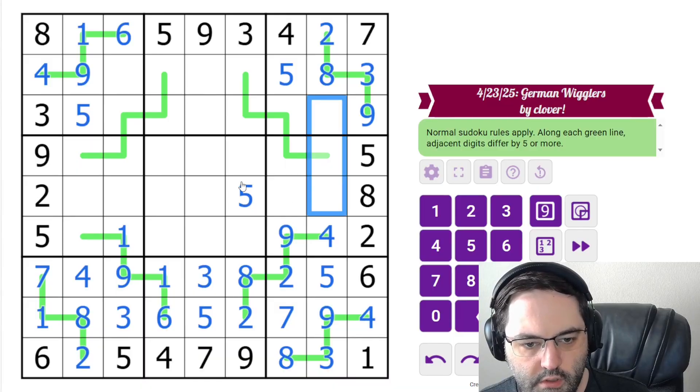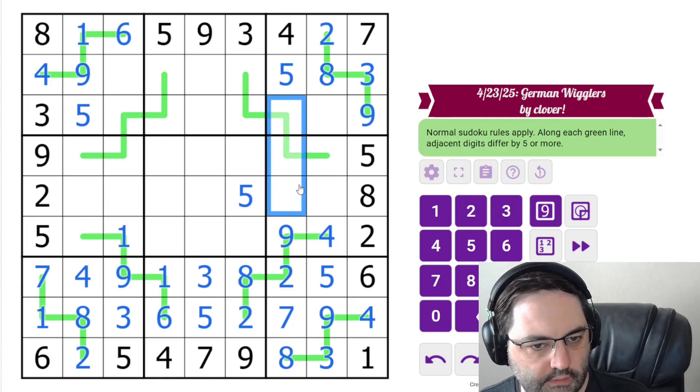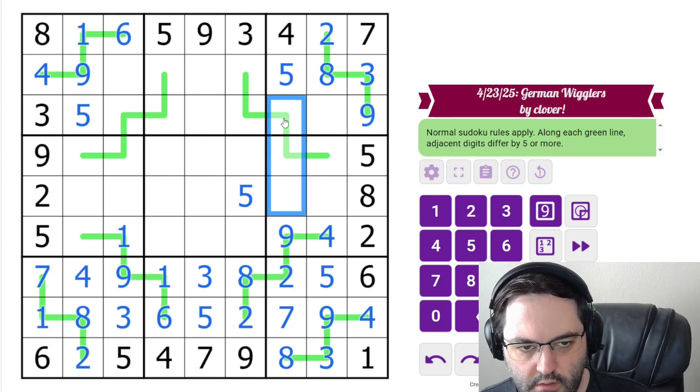So now we have 1, 6, and 7. We have 1, 6, and 3. 3 cannot go next to any of those digits. So it's going to have to go here.